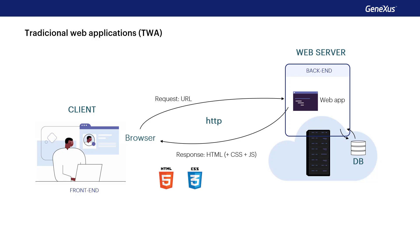For the web page displayed by the browser to not be static and to achieve interactive behavior and a good user experience, the HTML code can also include JavaScript code. JavaScript is a programming language that enables web pages to request data, respond to user events, display content updates on the fly, interact with maps, make 2D or 3D graphic animations, and play multimedia files, among many other things.